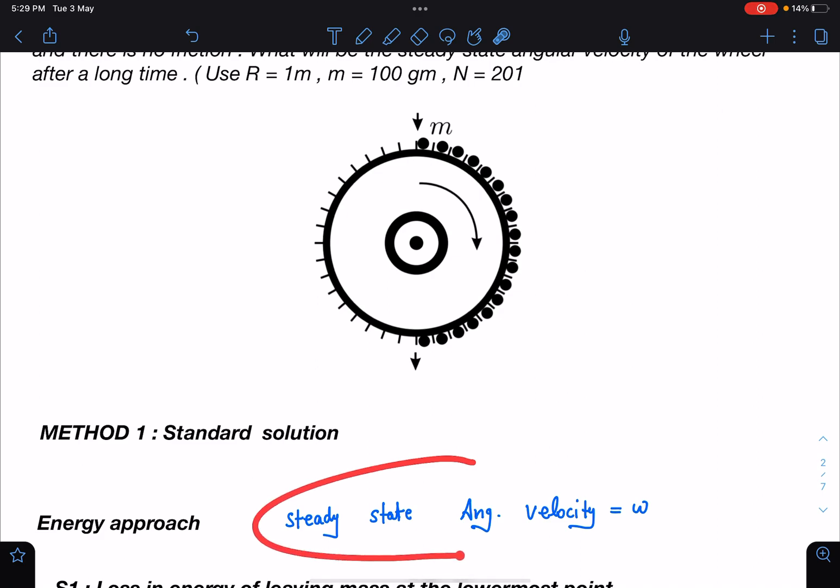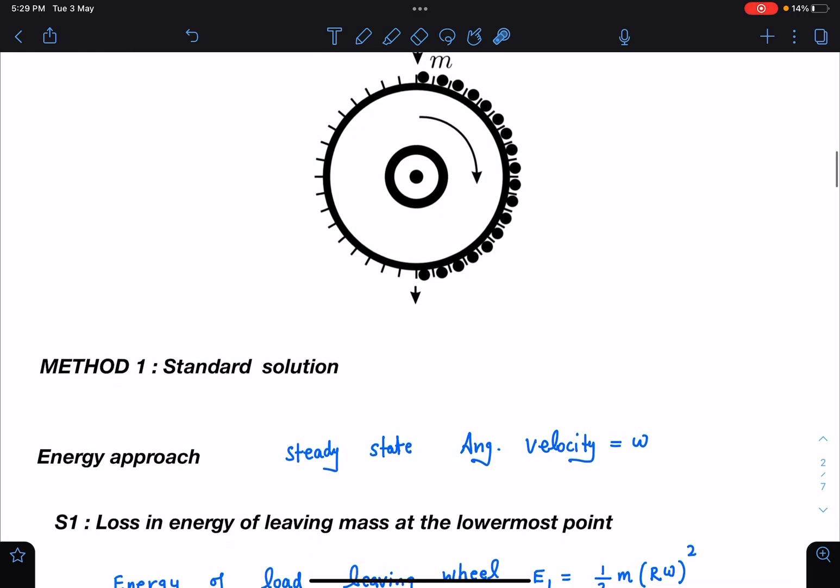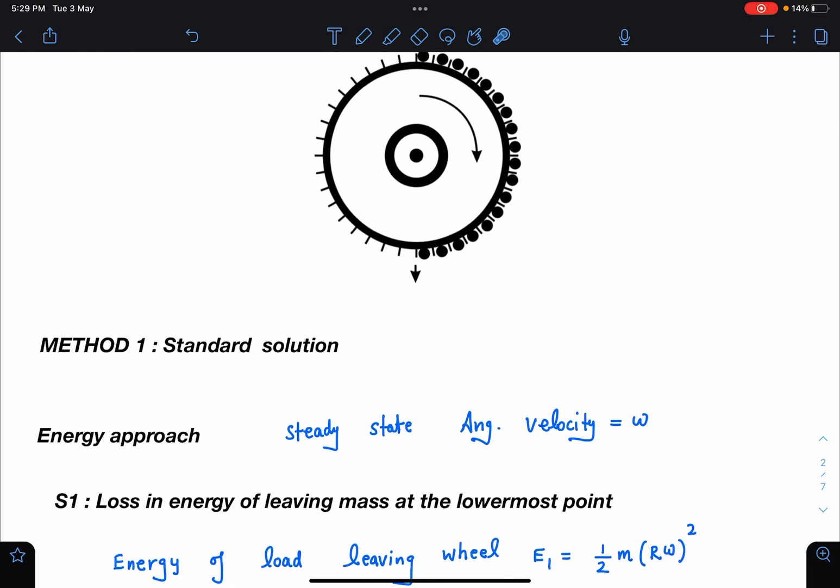First one is the standard solution, so energy approach. We are assuming the steady state angular velocity as omega in this case. Step one is loss in energy of leaving mass at the lowermost point. When this mass is leaving the system, it is leaving with zero relative velocity with respect to wheel. That means it is moving with the same velocity of R omega, and this is the energy leaving the system.